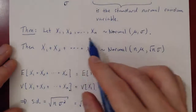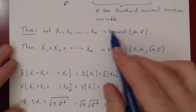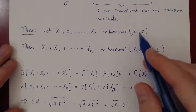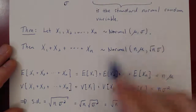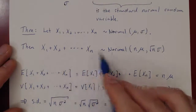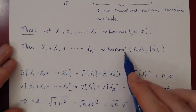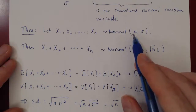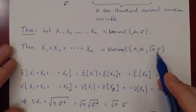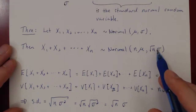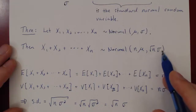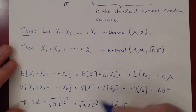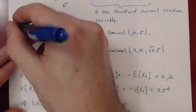So the result is: if you have n normal random variables that are independent with the same mean and the same deviation, the sum is still normal. The mean is n times the initial mean, and the deviation — you have to be careful — is root of n times the deviation of each random variable. That is a really important theorem.